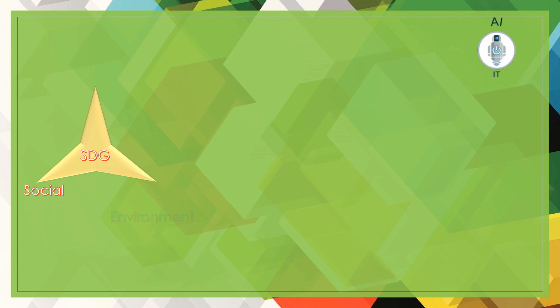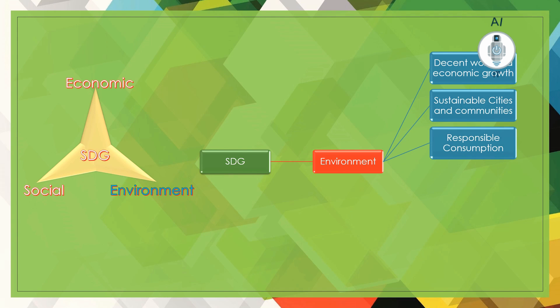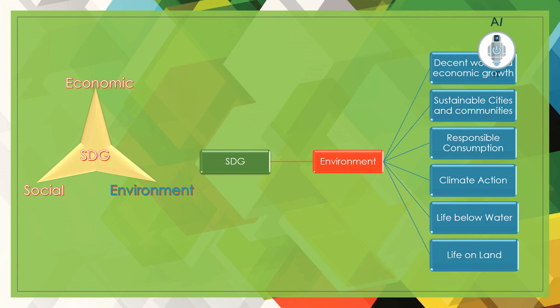For example, if we take the Sustainable Development Goals (SDGs), there are 17 goals divided into three categories: social, environmental, and economical. Let us assume we first choose environment as a topic. Under the SDG environment category, we have a list of problems — goals such as decent work and growth, sustainable cities and communities, responsible consumption, climate action, life below water, and life on land.